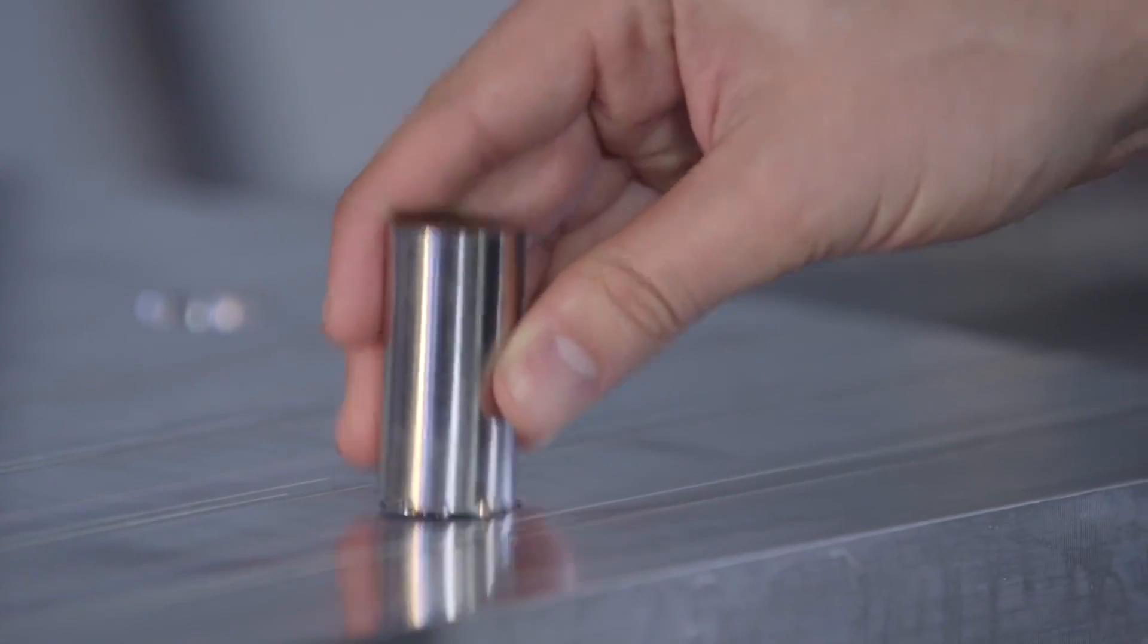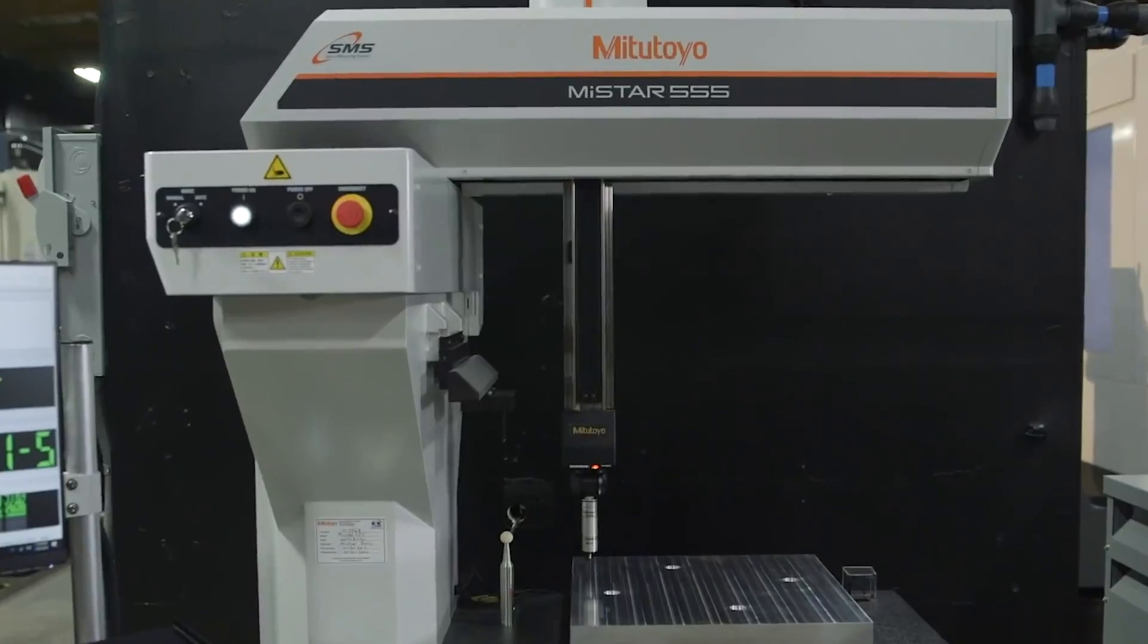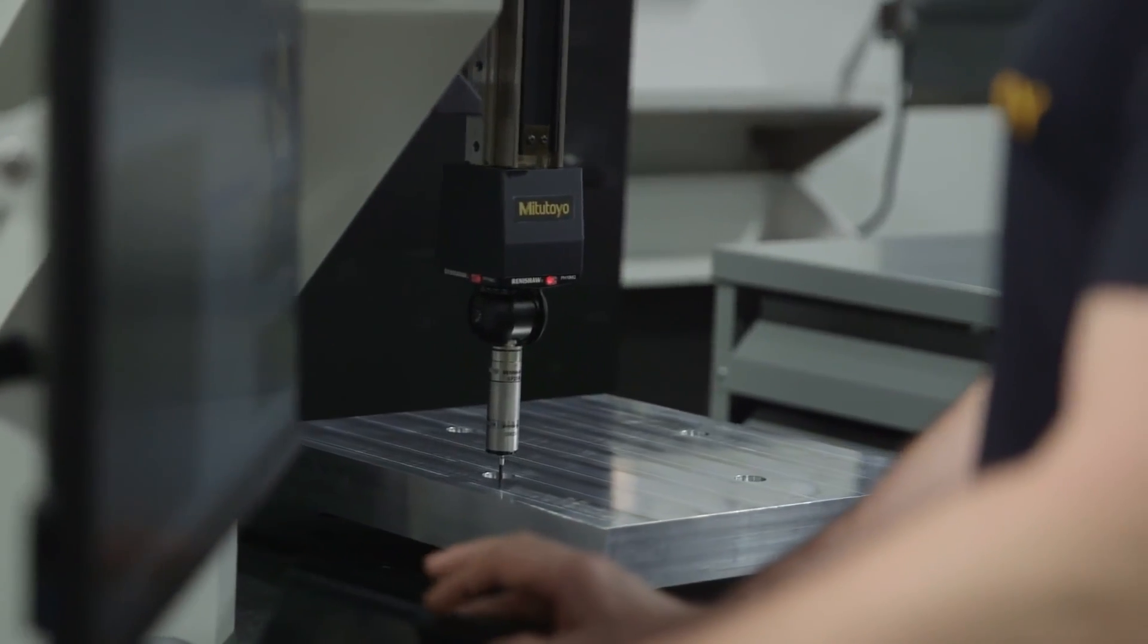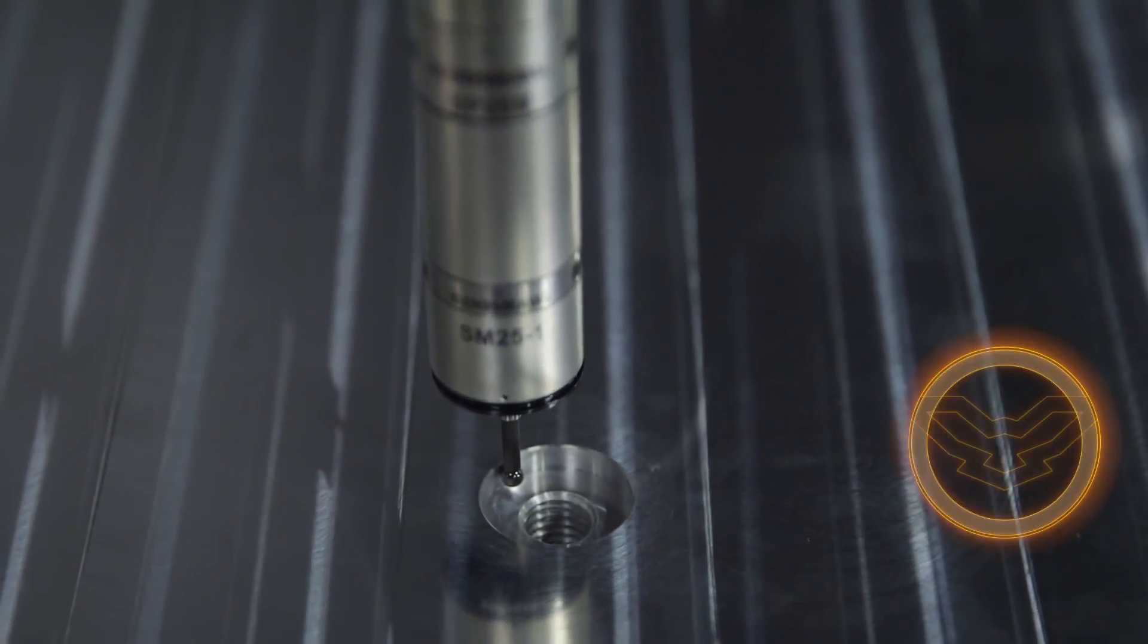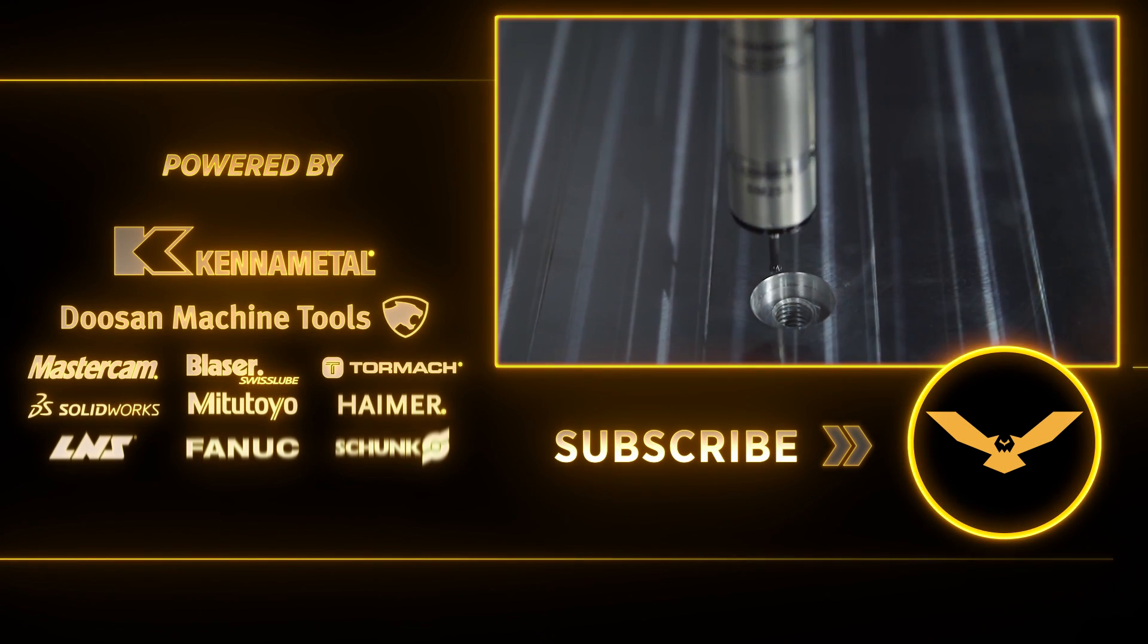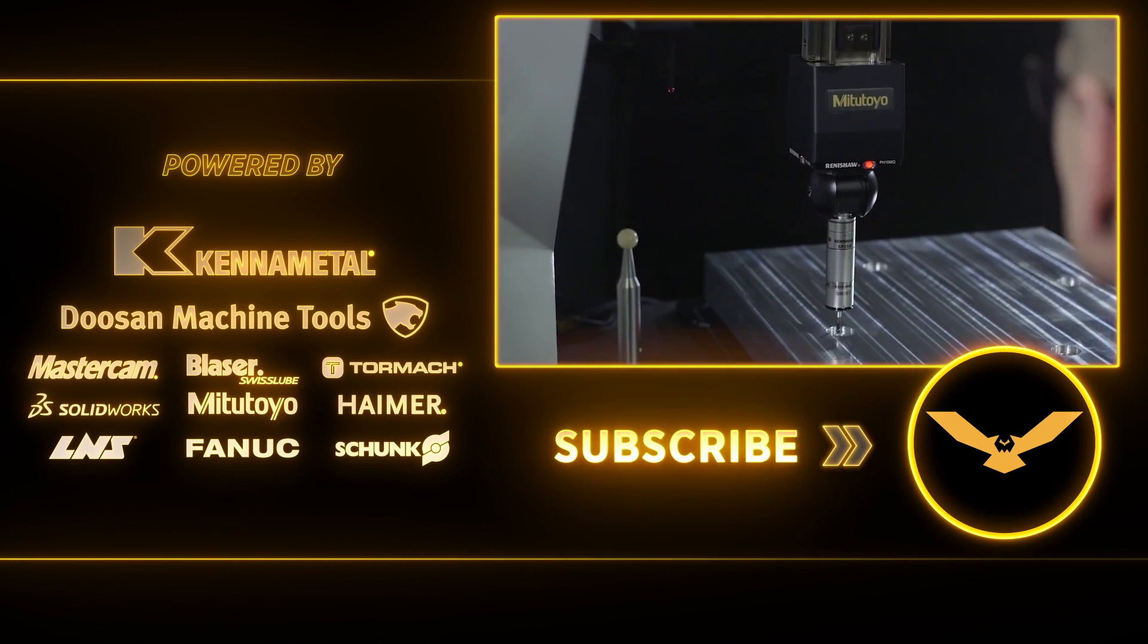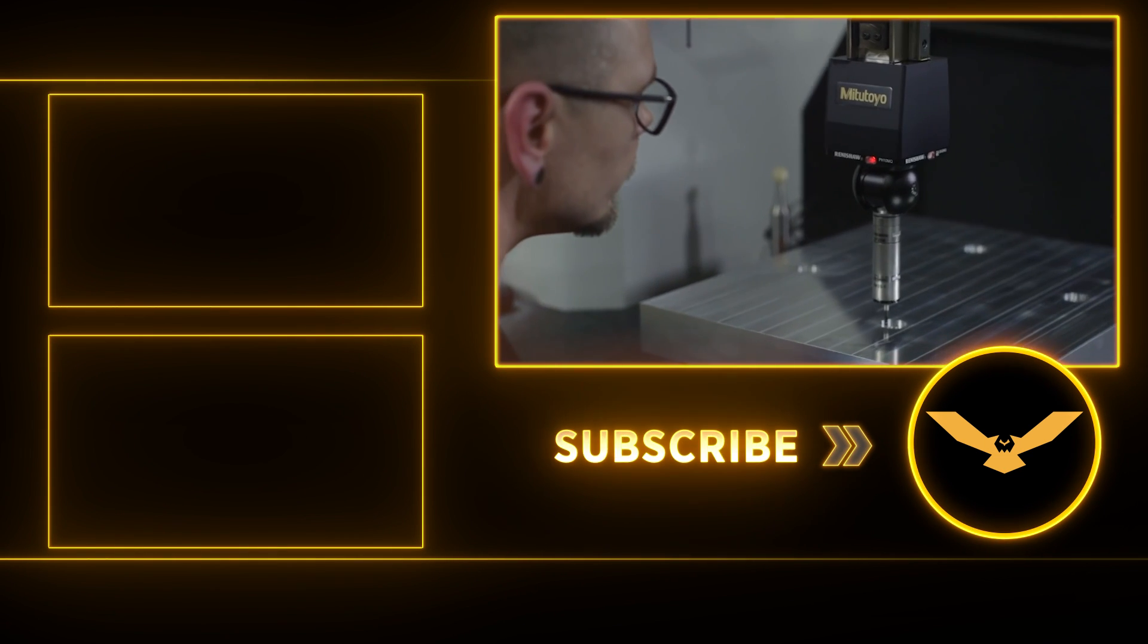And whenever you make a change with a tool or a program or make any adjustments, take the next part off, send it into inspection and let the inspector know exactly what you changed on that part so they can inspect it and make sure everything is perfect.